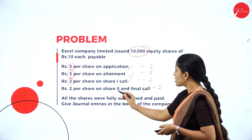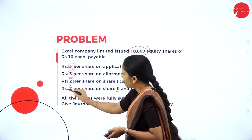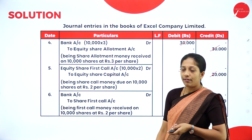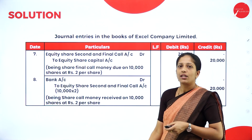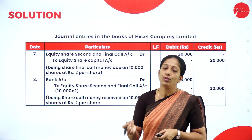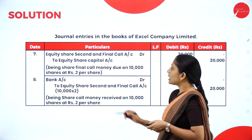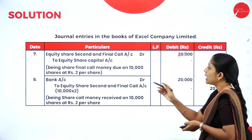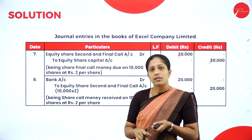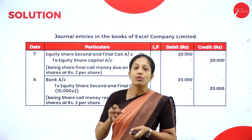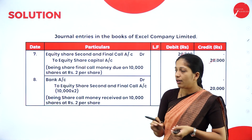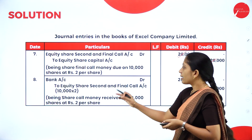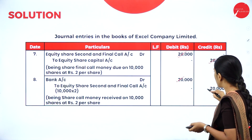For the second and final call stage, the amount per share is ₹2. The due entry is: Equity Share Second and Final Call Account Dr. to Equity Share Capital Account — 10,000 × ₹2 = ₹20,000. The receiving entry is: Bank Account Dr. to Equity Share Second and Final Call Account — 10,000 × ₹2 = ₹20,000. Narration: share second and final call money received.